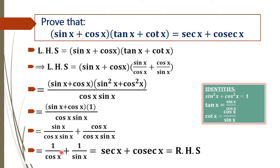Now 1 / cos x = sec x and 1 / sin x = cosec x, as per trigonometric identities, which is equal to the right hand side of the equation. Hence proved.